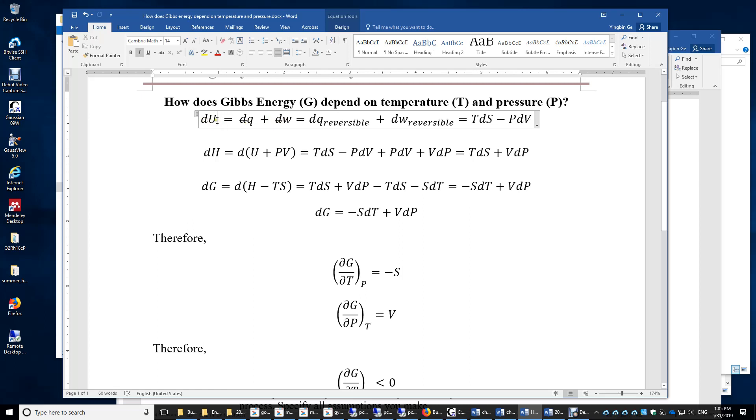Because U is a state function, we can imagine a reversible process in which U is changed to U plus dU. Therefore, dU equals dQ reversible plus dW reversible in this reversible process. And dQ reversible equals TdS given the definition of entropy. The definition of entropy is indirect. It's dS equals dQ reversible over T.